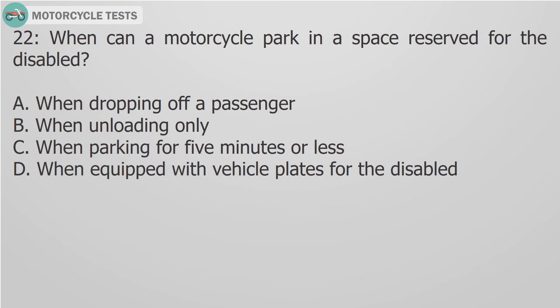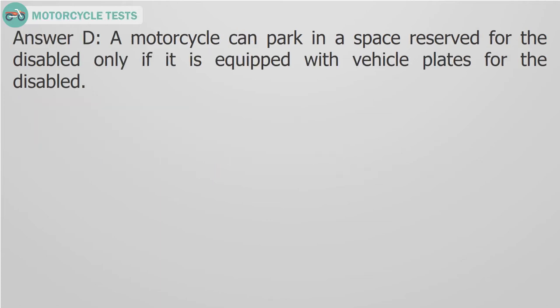Question 22. When can a motorcycle park in a space reserved for the disabled? A. When dropping off a passenger. B. When unloading only. C. When parking for 5 minutes or less. D. When equipped with vehicle plates for the disabled. Answer D. A motorcycle can park in a space reserved for the disabled only if it is equipped with vehicle plates for the disabled.